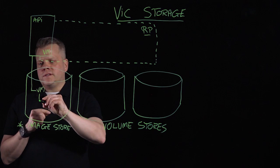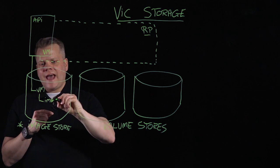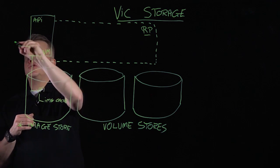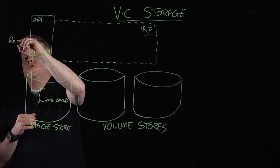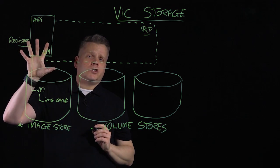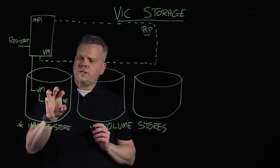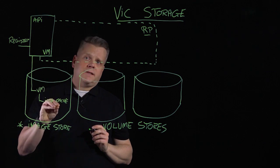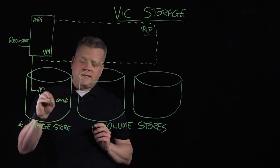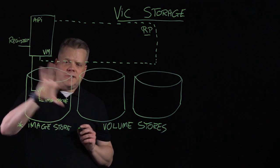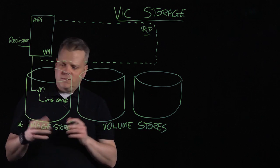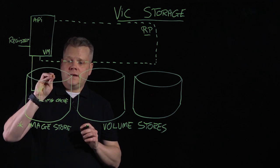The second thing we use the image store for is our image cache. Docker uses a registry to store images. When you request an image to be instantiated, it'll first look at the image cache; if it doesn't have it locally, it'll go out to the registry, pull it down, and copy it to the cache. This image store needs to be a vSphere datastore — it doesn't have to be dedicated, but it does need to be a vSphere datastore associated to this function.